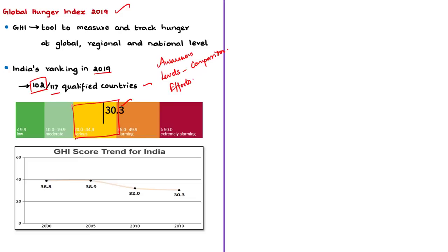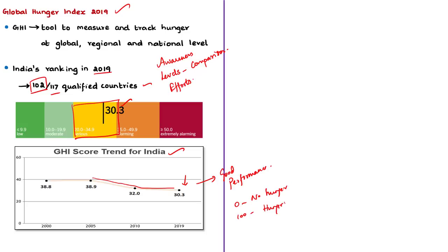Looking at the score trend for India, the scores are declining after the year 2005, meaning India has been performing well in combating hunger overall. The scores are based on a 100-point severity scale where 0 is the best score and 100 is the worst — 0 means no hunger and 100 means suffering from hunger. Since India's score is coming nearer to 0, India is performing comparatively well, but the performance is not enough because top-scoring countries have scored less than 5 points. As a country, we are quite far from achieving the target.